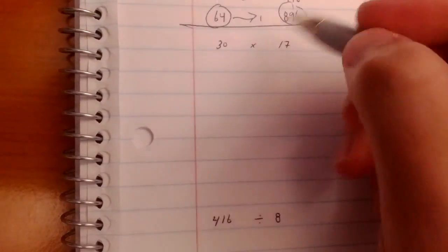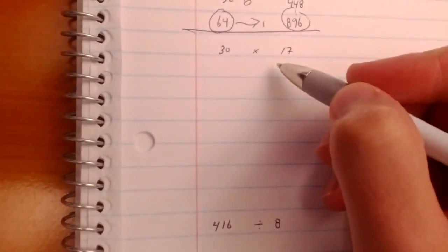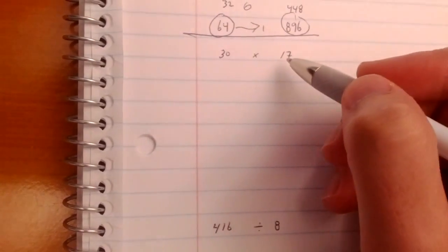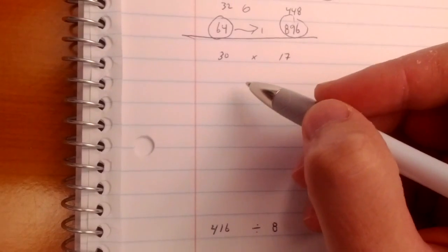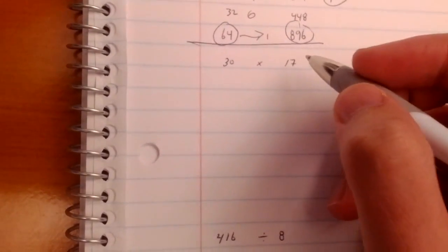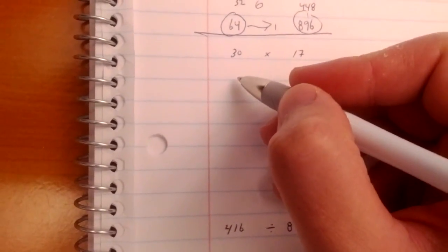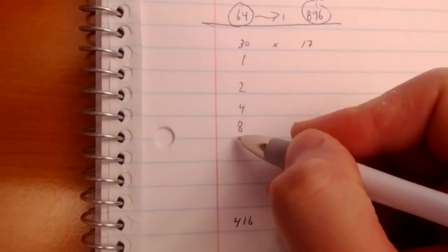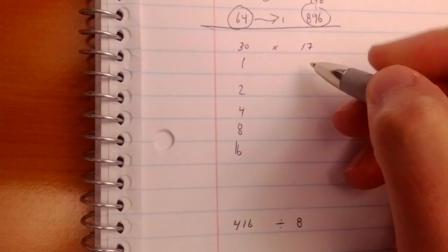Now, to do that again, let's say 30 times 17. Well, obviously you could just drop your zeros, say 3 times 17, add 0 back. But assume you're not smart enough to figure that out. We'll start: 1, 2, 4, 8, 16. That's probably enough.